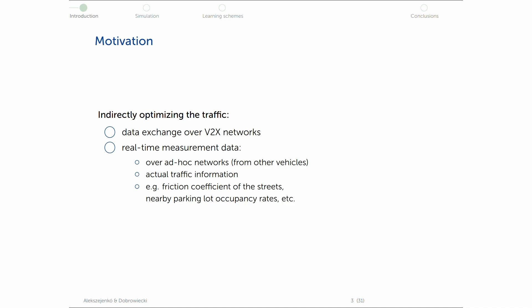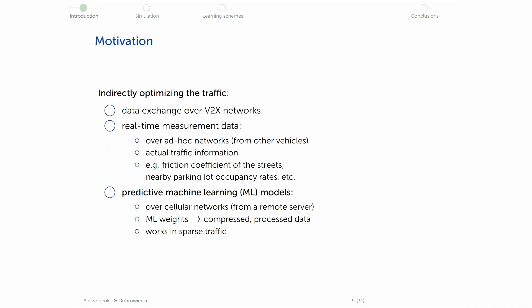For example, friction coefficient on the road, how slippery the road is, are there any free parking lots in the neighborhood, et cetera. And from this, you can also build a predictive machine learning model to predict the current state or the future state of the network and do some improvements on the traffic flow.